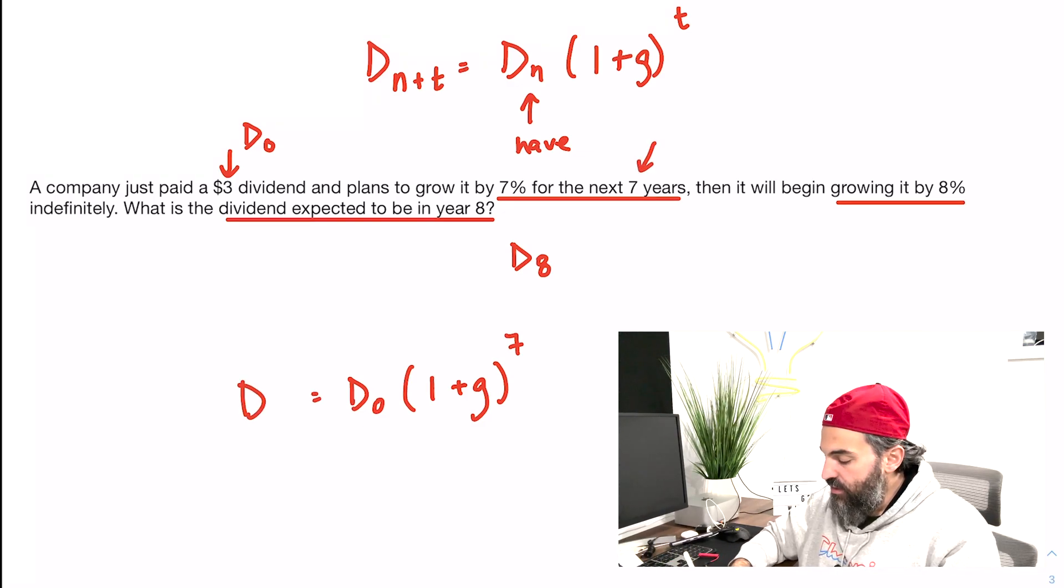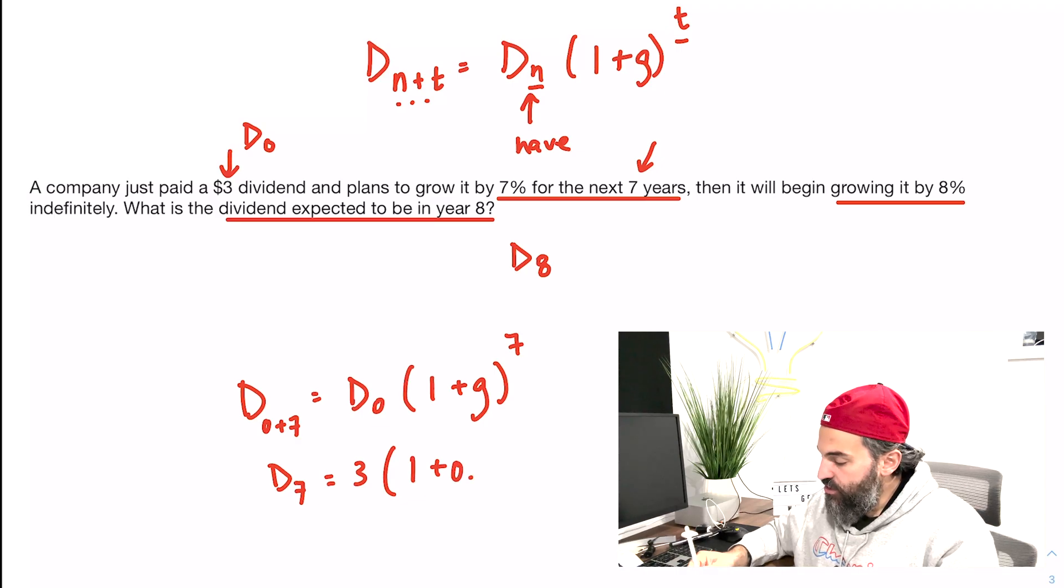If you look at the formula, N plus T, so 0 plus 7. So D7, if I just do the math now, is 3, that's my D0, multiplied by 1 plus g, that's the growth rate of 7%, to the power of 7.